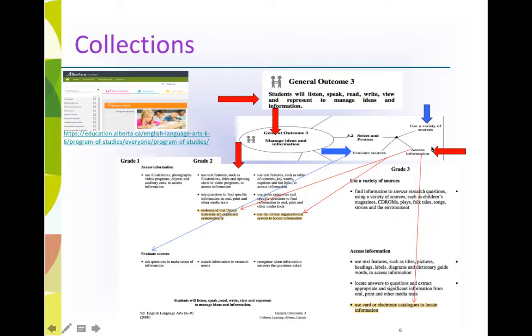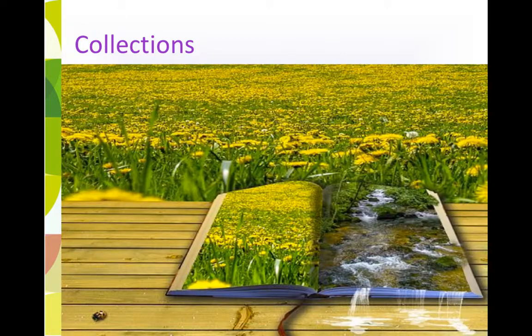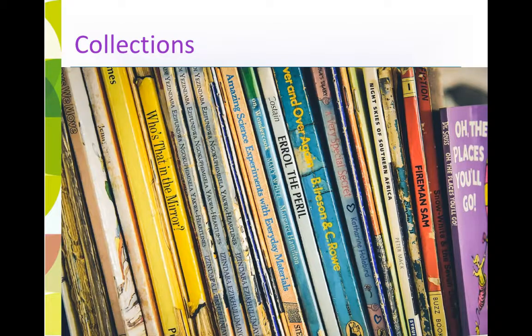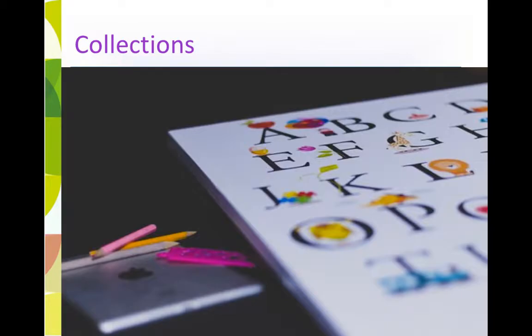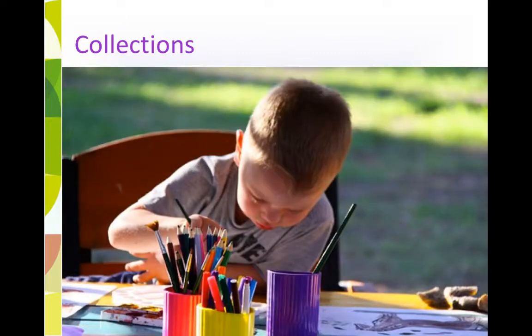In Grade 1 or 2, you could introduce library systems using fiction picture book author surnames — a great way to reinforce learning the alphabet and introduce a variety of authors at the same time. Introduce the Dewey Decimal Classification System in relation to decimals in math. Have students paint, collage, or draw pictures or posters of subject areas and display them in the Learning Commons. The possibilities to involve, inspire, and connect Learning Commons and curriculum are endless.